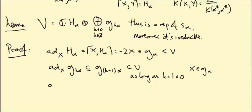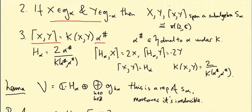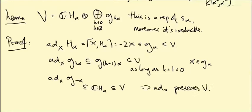Let's deal with the case k+1 = 0 separately. If I apply ad_x to an element of g_{-alpha}, a priori I only get that it's contained in g_0, but we actually know something more. We proved earlier that if x is in g_alpha and y is in g_{-alpha}, then x bracket y is a multiple of alpha sharp, which is a multiple of h_alpha. So ad_x of g_{-alpha} is contained in the span of h_alpha, which is a subset of g_0 but not the whole thing, and that's certainly contained in V. So ad_x preserves V, making it a sub-representation.